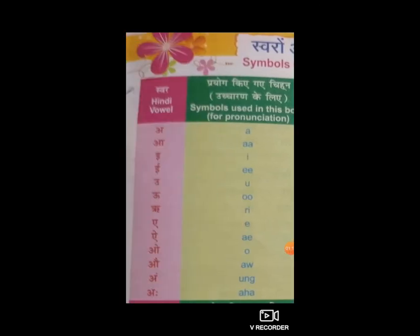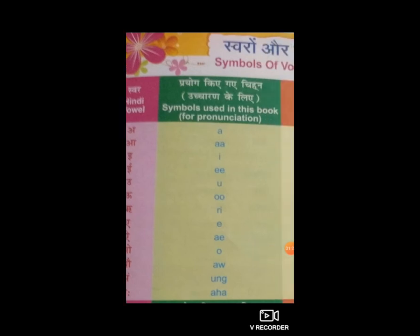अब है 'इ' - I। इसे इमली: I, M, L, I। फिर होगा बड़ा 'ई' - यानि की double E। इसे एक: E, K, H।